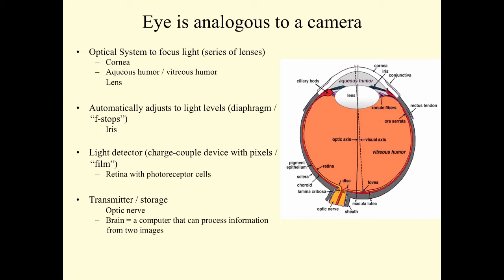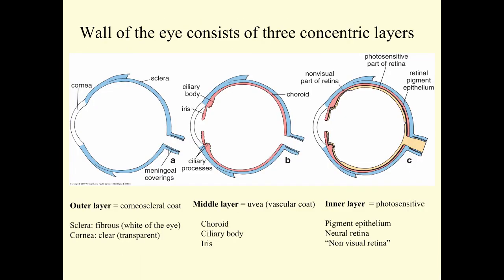The brain processes information from two distinct images, because we have two eyes. In addition, the eye has the ability to protect itself, maintain its tissues, repair tissues, clean itself, and the eyes can track movement. The wall of the eye consists of three concentric layers.